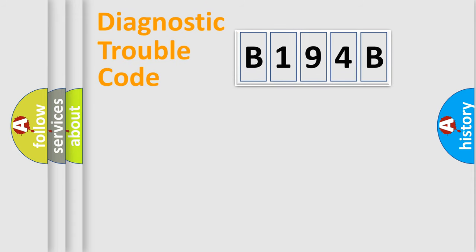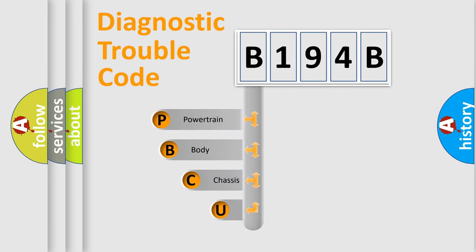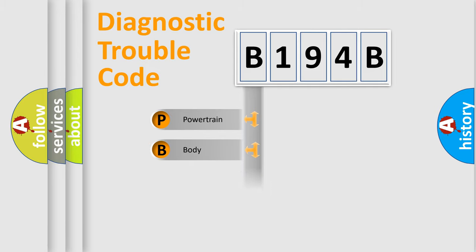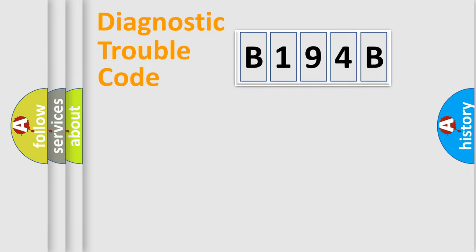Let's do this. First, let's look at the history of diagnostic fault code composition according to the OBD2 protocol, which is unified for all automakers since 2000. We divide the electric system of an automobile into four basic units: Powertrain, Body, Chassis, and Network.